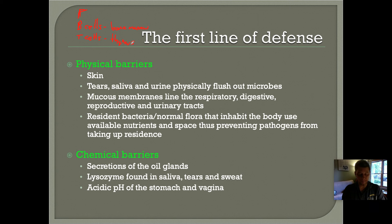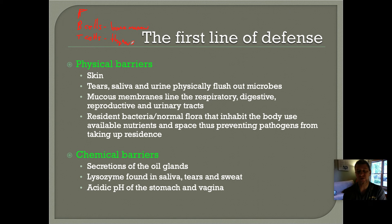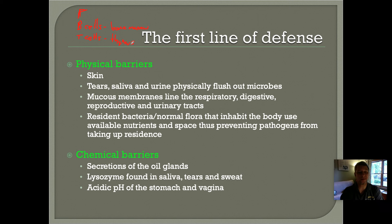The defense of your body has essentially three lines of defense, just like a good army. The first line of defense is the physical barriers. Think about a castle in medieval times being besieged by an invading army — the first barrier the invading army encounters would be the physical barriers. These include things like the skin, which would represent the castle walls, as well as fluid physical barriers like tears, saliva, and urine, which literally physically flush the microbes out of the body.